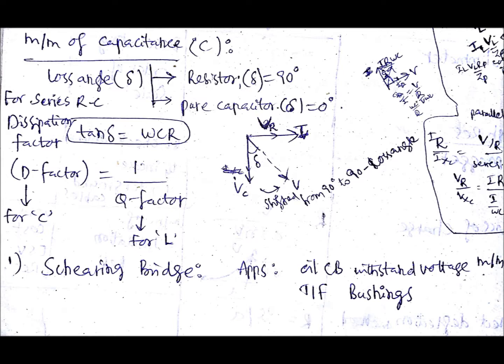The dissipation factor is nothing but tan of loss angle. That is, tan delta equals omega CR. You will get that from the phasor diagram. And that D factor or dissipation factor for capacitor is nothing but 1 divided by Q factor for inductor.